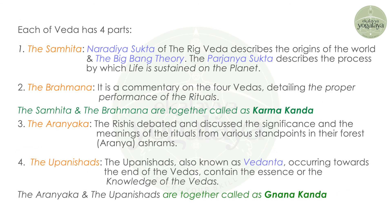Each of the Vedas has four parts. The first is the Samhita. The Naradhiya Shukta of the Rigveda describes the origin of the world and the Big Bang theory. The Parjanya Shukta describes the process by which life is sustained on the planet. The Brahmana is a commentary on the four Vedas detailing the proper performance of the rituals. The Samhita and Brahmanas together are called Karmakanda.